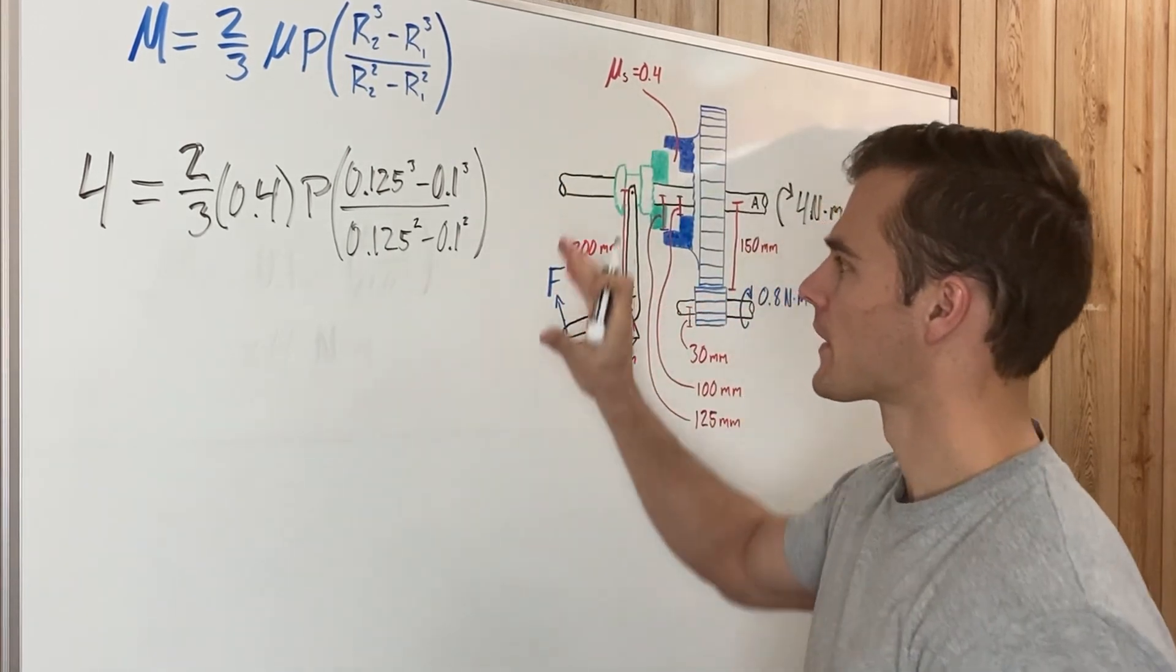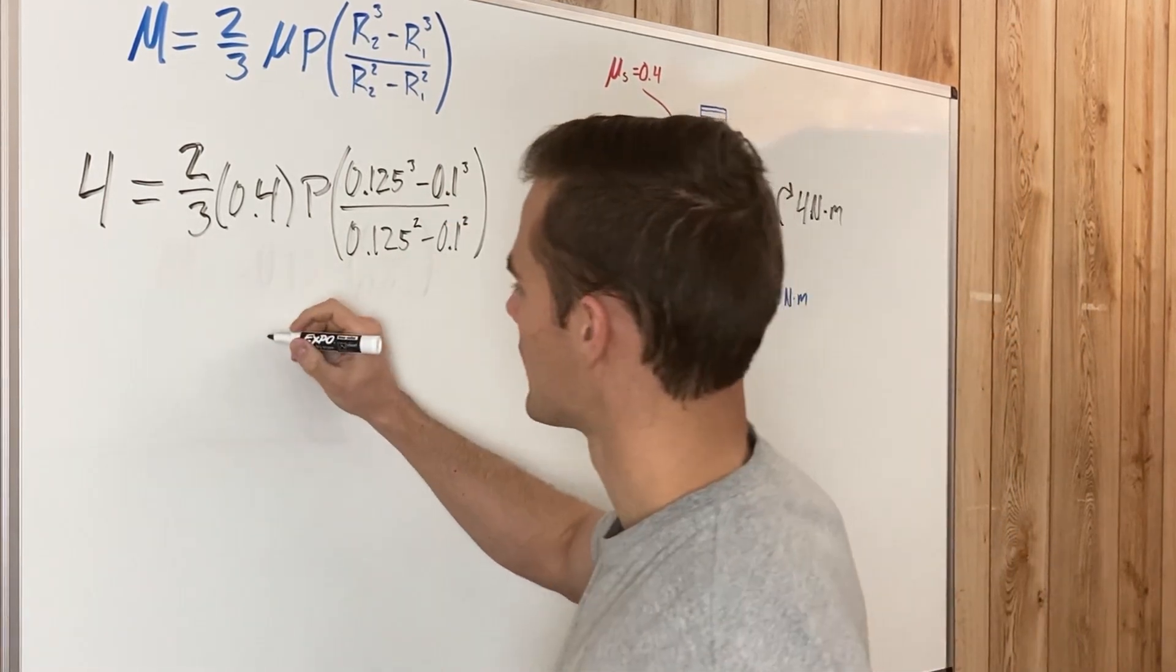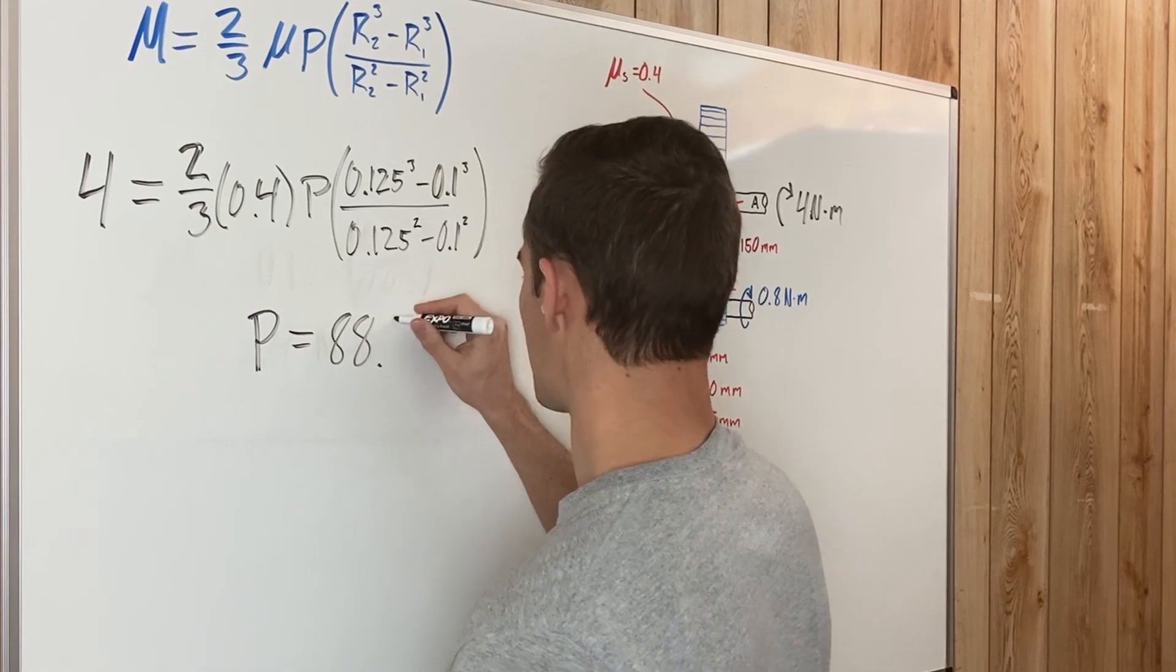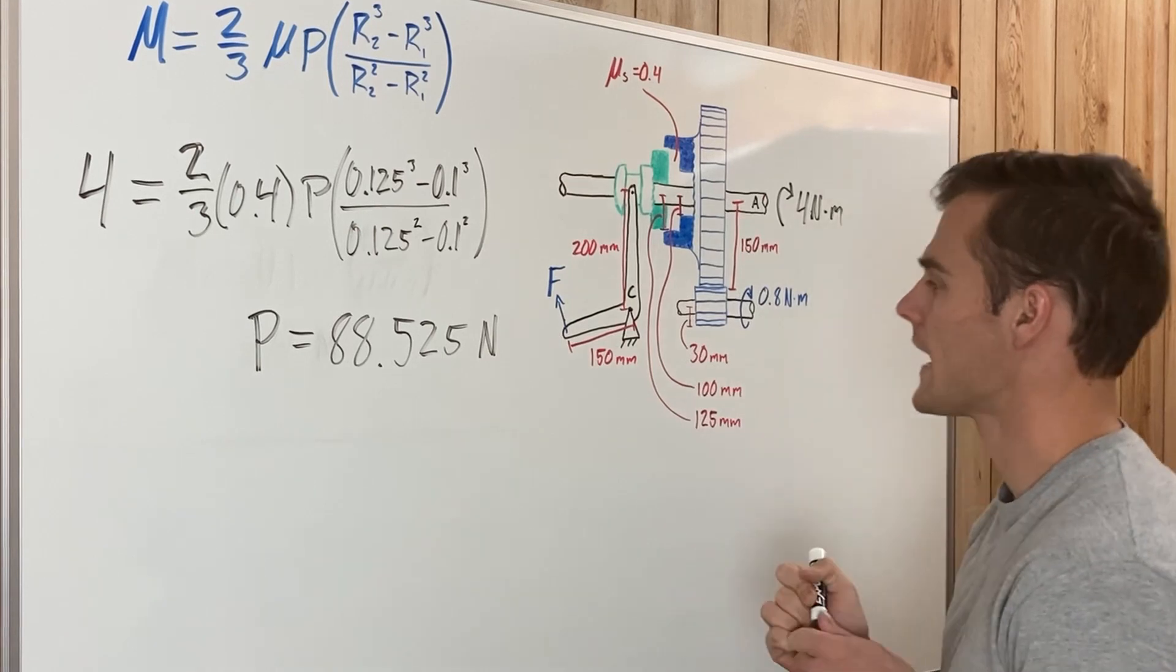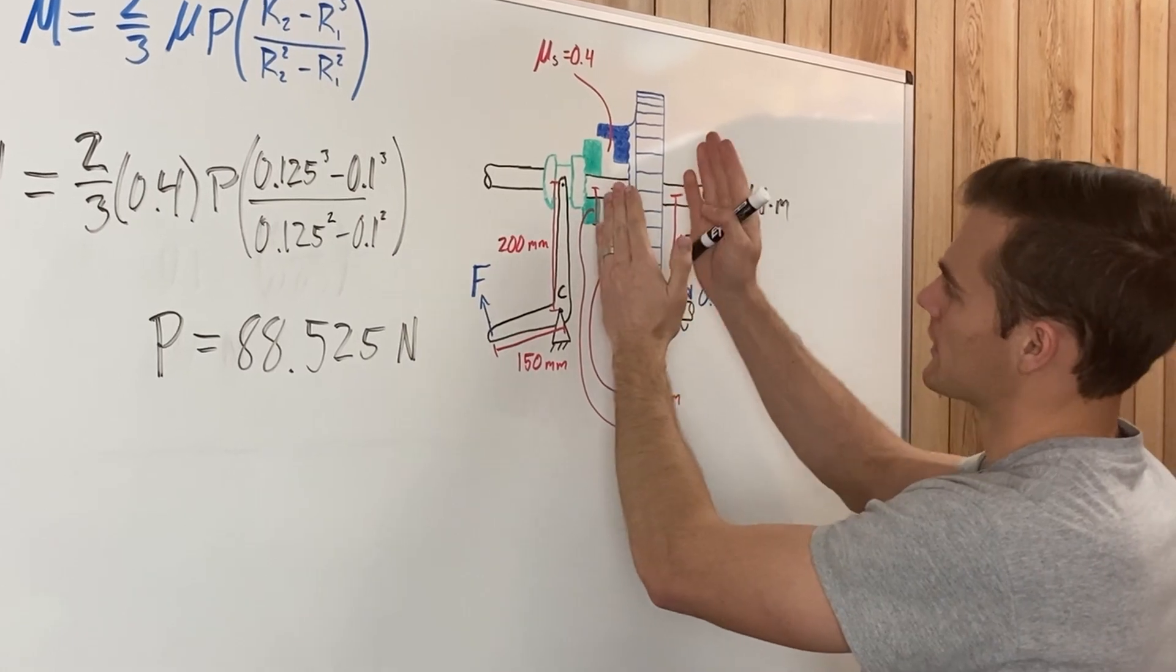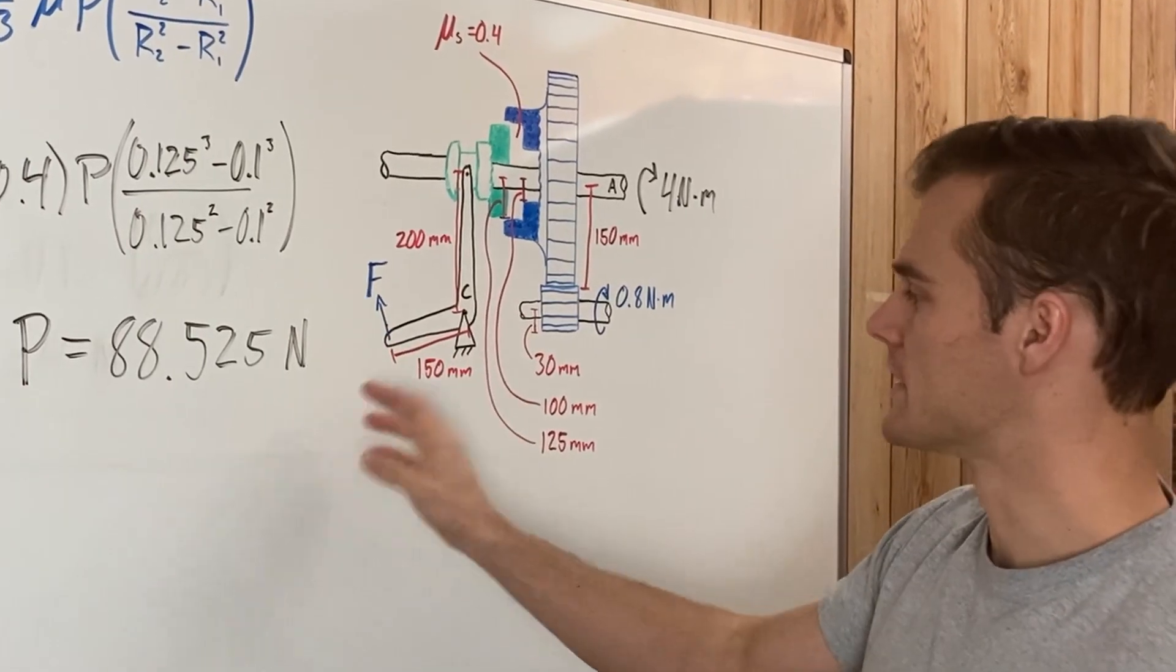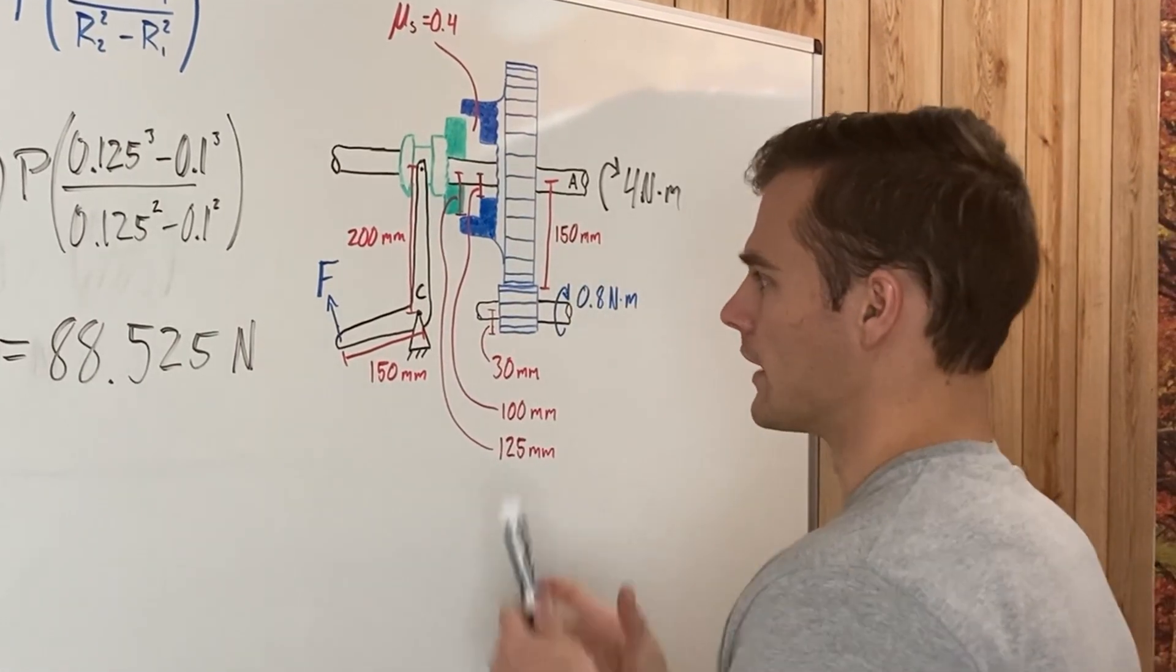Plugging all that into the calculator and dividing over the other side by 4 solves for P, and we get P equals 88.525 newtons. That is the axial force that this mechanism needs to press in right here on this plate to be able to get it to stop. But we need to find the force F here. These would be the same if these two distances were the same, but they're not. So now we need to find F.